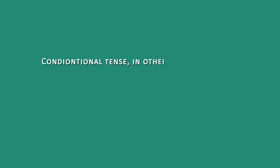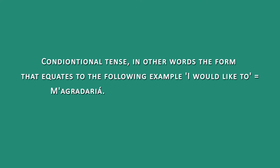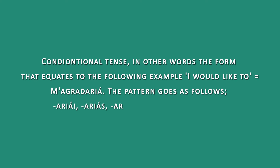Conditional tense — in other words, the form that equates to 'I would' — for example, magradaria, meaning 'I would like to.' The conditional endings for the first group are: arie, arias, aria, ariam, ariaetz, and arian.